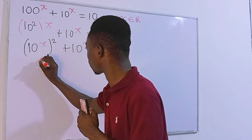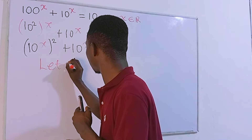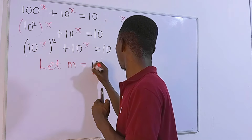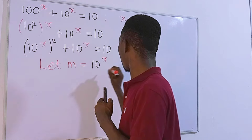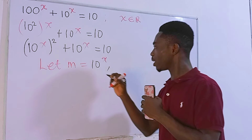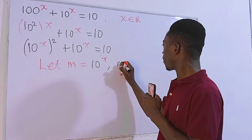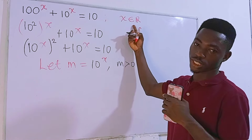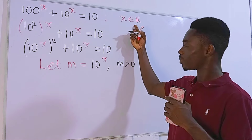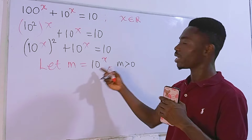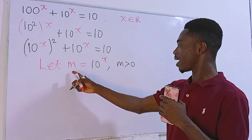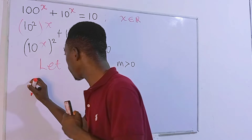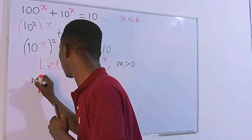Since the same expression appears twice, we can use substitution. We let m equal 10 to the power x, with the condition that m must be greater than zero — because 10 to the power x is always a positive number.